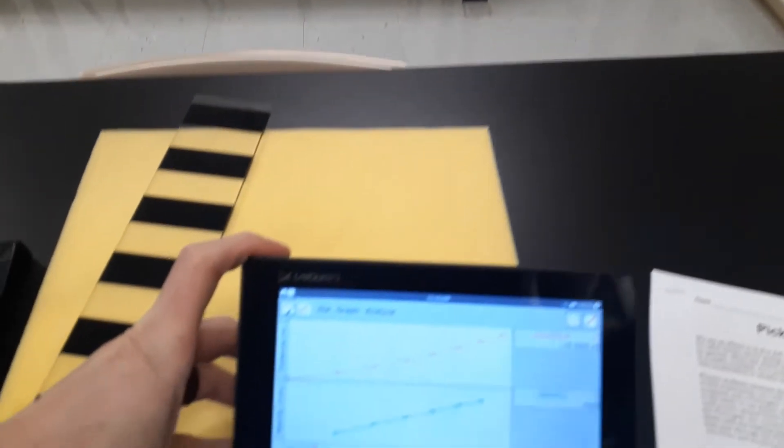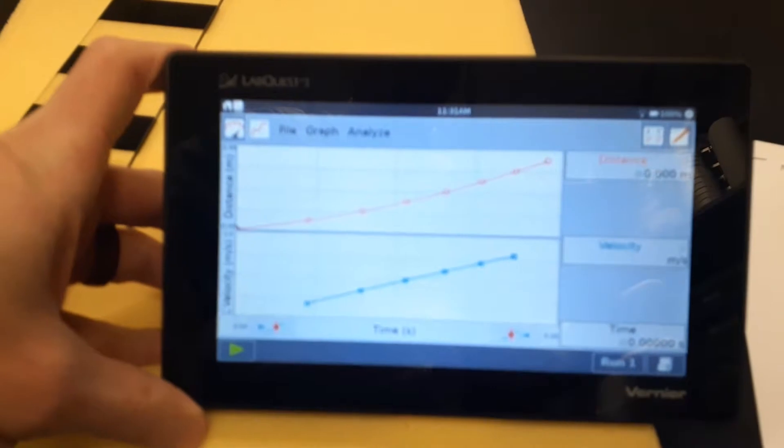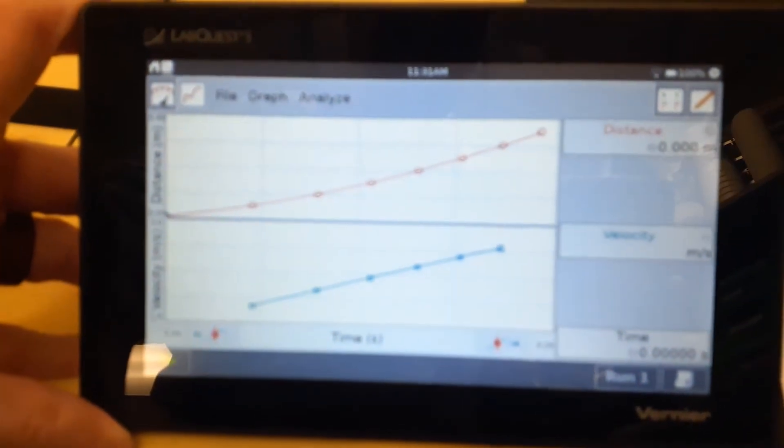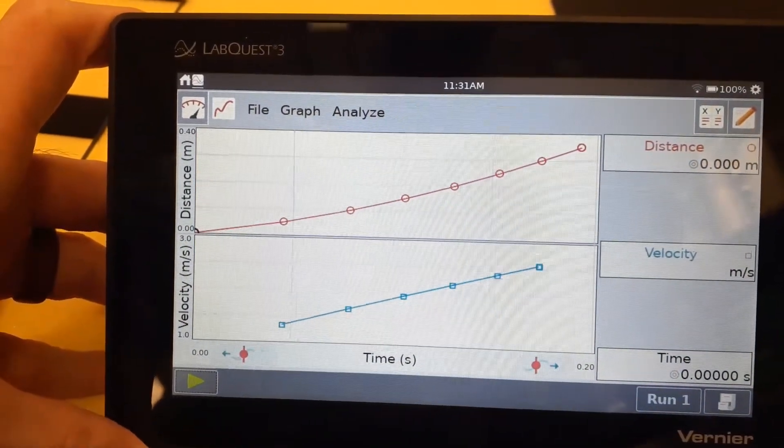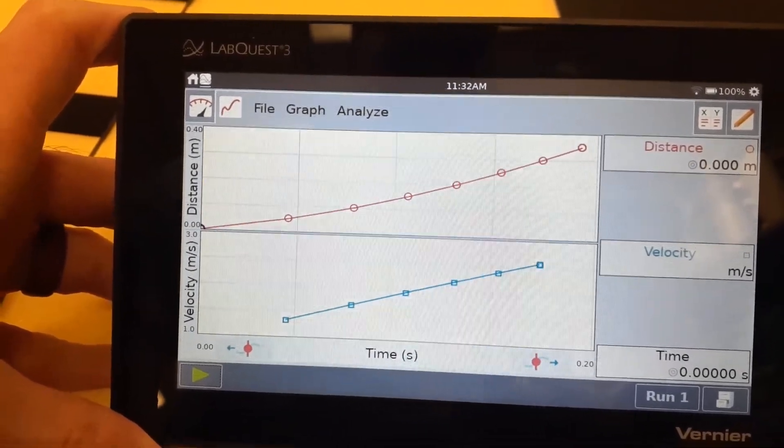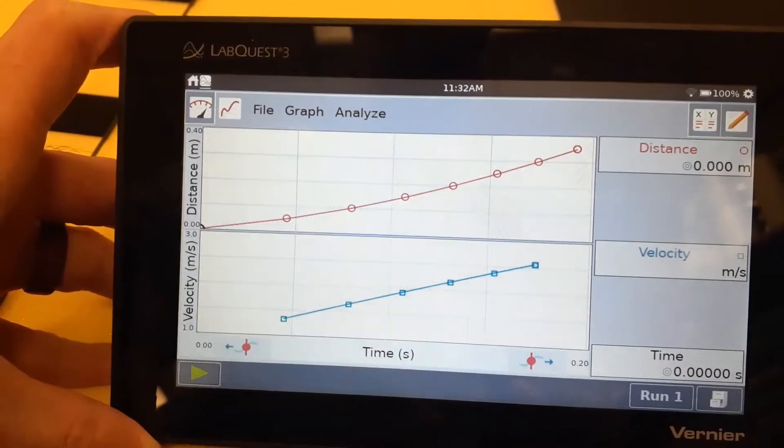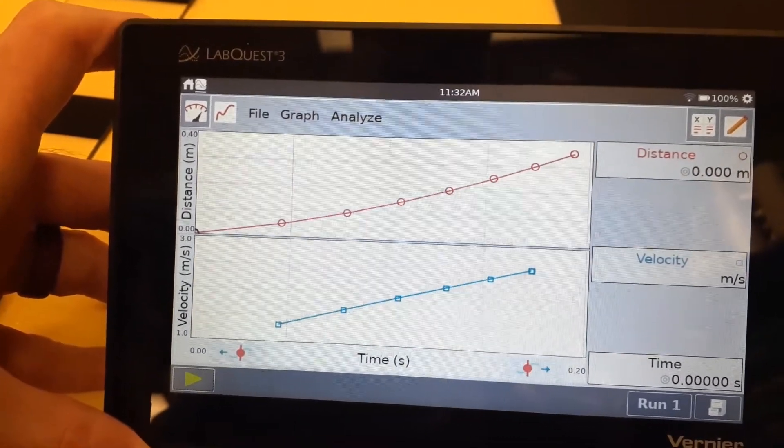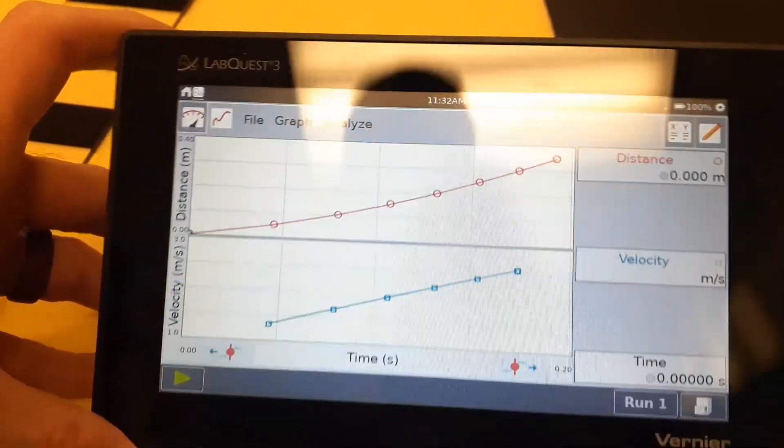So what it's going to do is produce two graphs for us. It's going to give us a graph right here with the distance versus time on the top graph with a red line, and the bottom blue graph, the velocity versus time. So I went ahead and I dropped that picket fence through there once, and this is what it's given me.